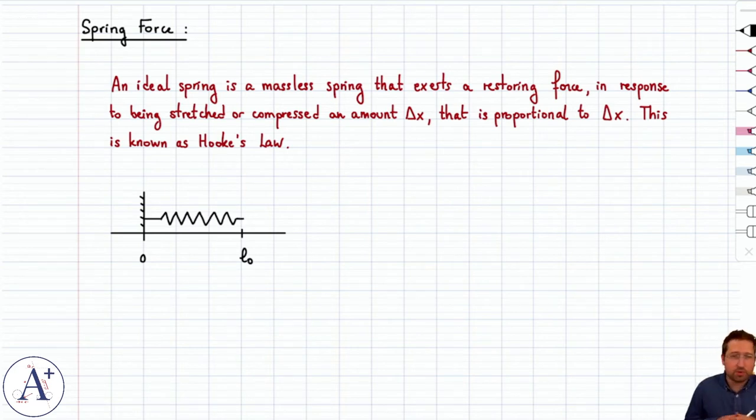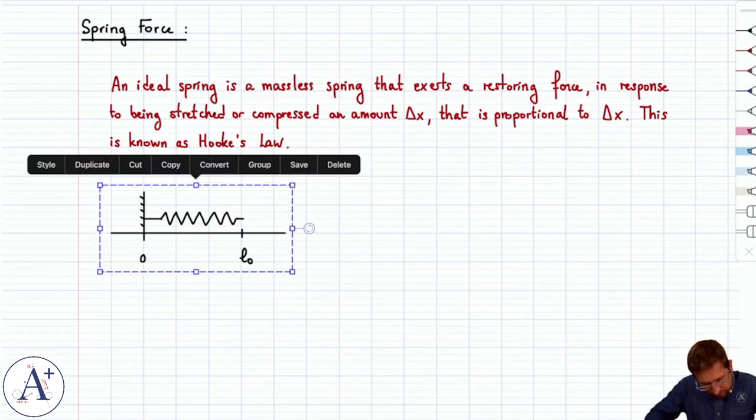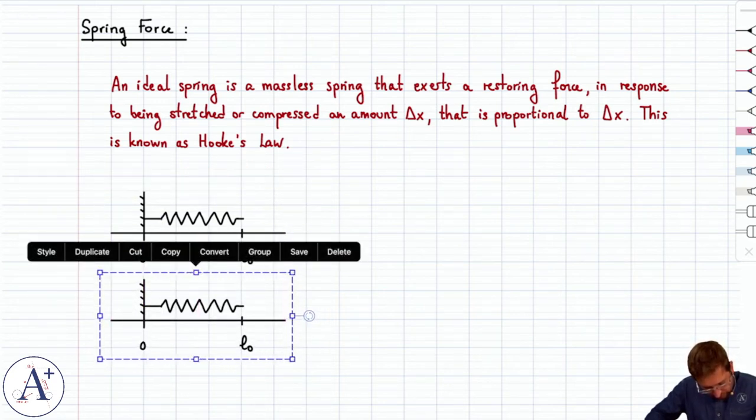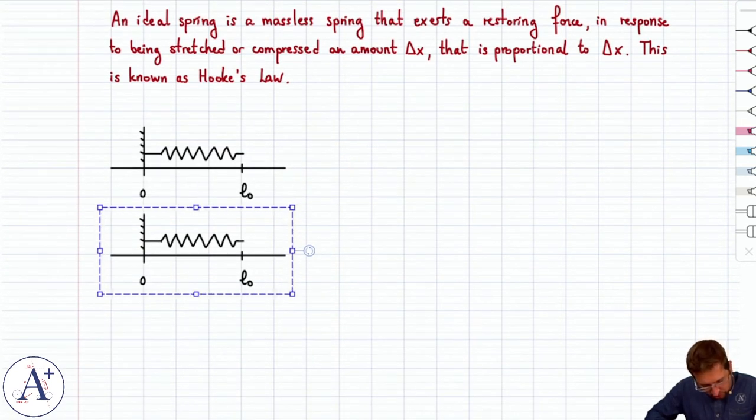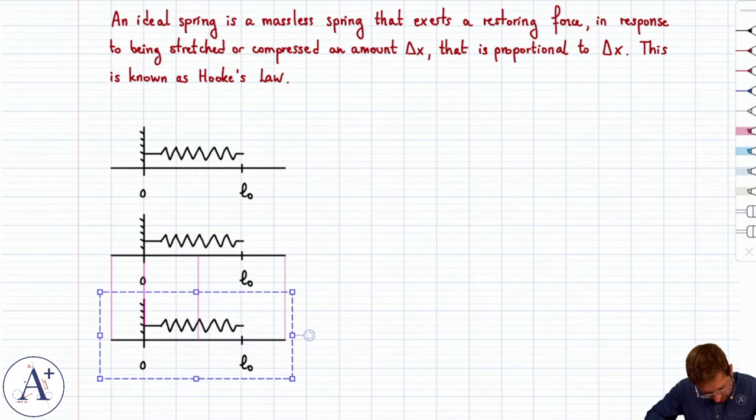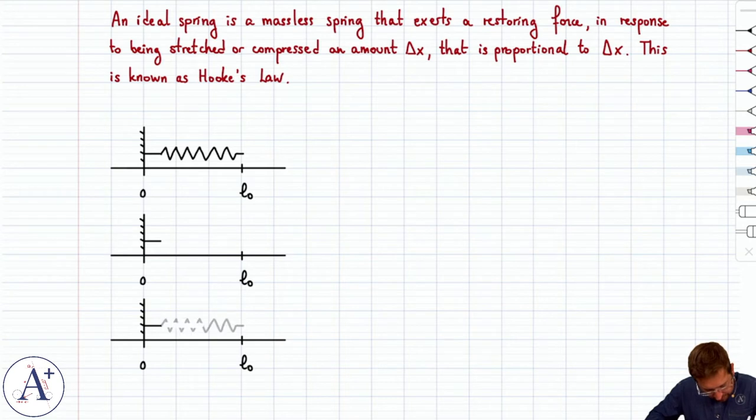Your spring looks like this - that's pretty much what the spring looks like, at least in physics. This is your spring, and you can do a few things with this: you can make it longer by pulling on it, by stretching it, or you could make it shorter by compressing it. So let's draw what happens when you do these things.